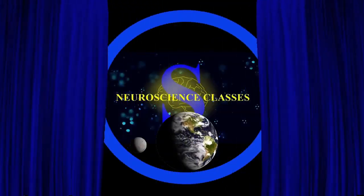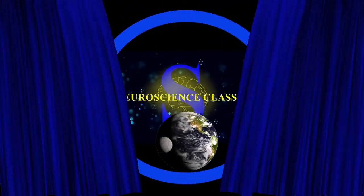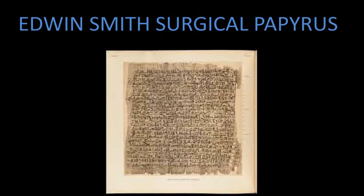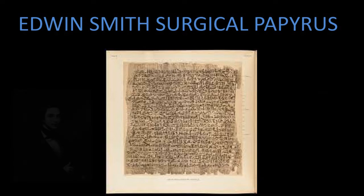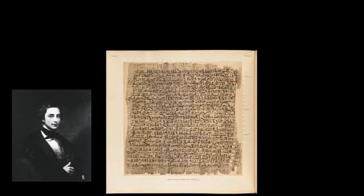Which text contains the earliest recorded reference to the brain? Edwin Smith's Surgical Papyrus. It was written in the 17th century BC and contains the earliest recorded reference to the brain. It's an ancient Egyptian medical text named after Edwin Smith, who was an American dealer and collector of antiquities.